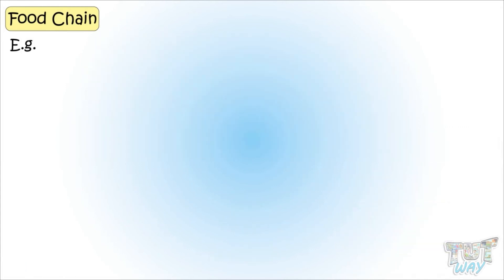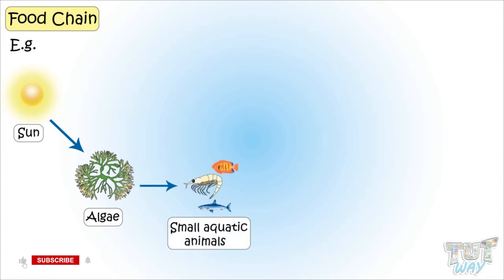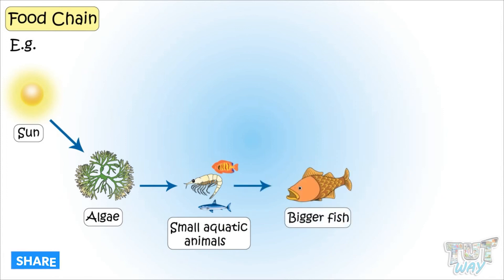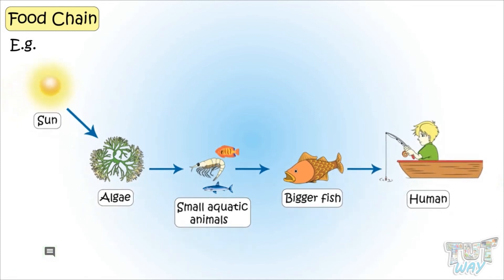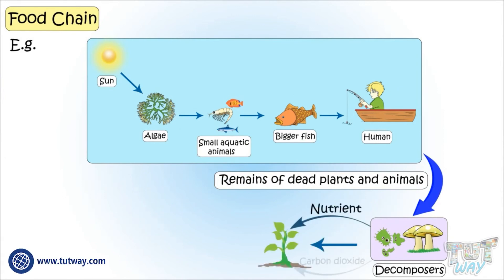Here is another example of a food chain. Algae, a green-colored aquatic plant, grows using energy from the sun. Algae is eaten as food by many small aquatic animals and fish, which are then eaten by bigger fish. And fish is hunted by humans for food. Again, the waste material from all animals and plants is decomposed by microorganisms into nutrients and carbon.